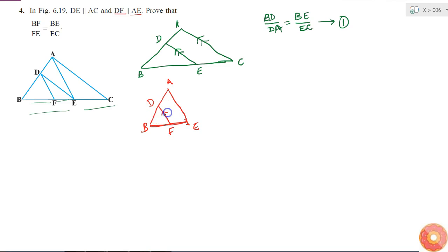DF is parallel to AE. So in this triangle, if this DF is parallel to AE, then again the same ratio will be valid, right? That is BD by DA is equal to BF by FE, right.